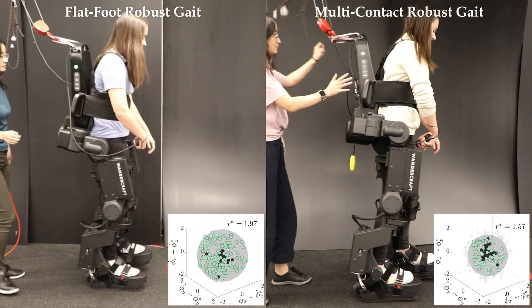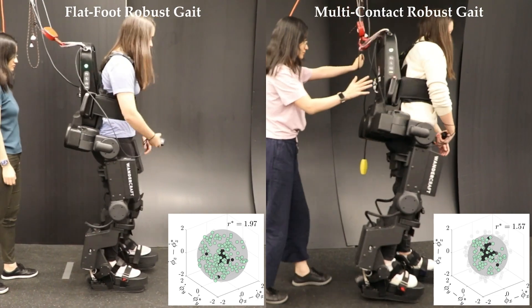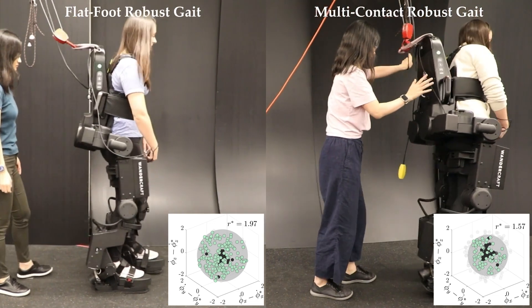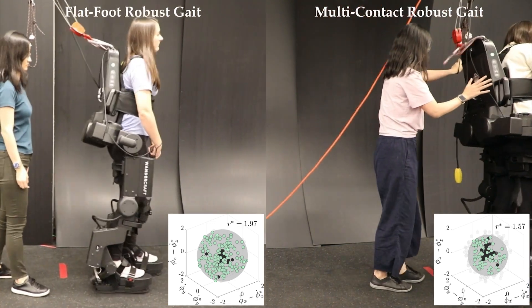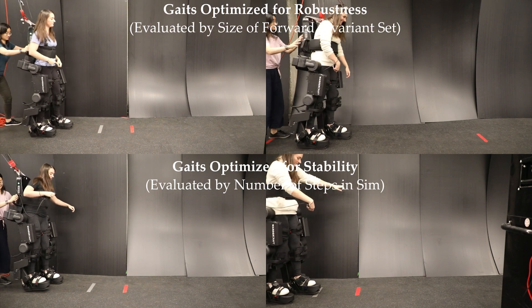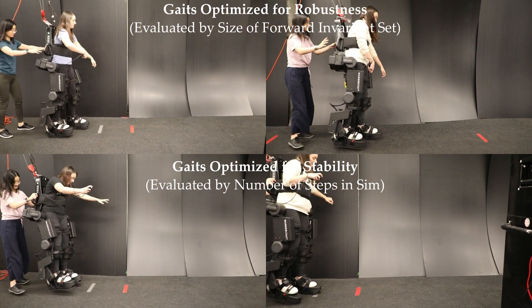For comparison purposes, two gaits were also optimized for stability alone as evaluated by the total number of steps taken. Interestingly, these gaits failed to translate to hardware, while the gaits optimized for robustness succeeded.